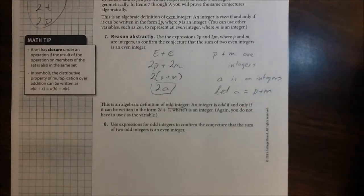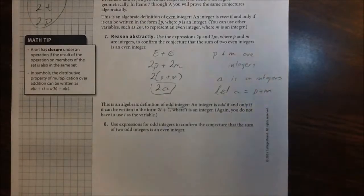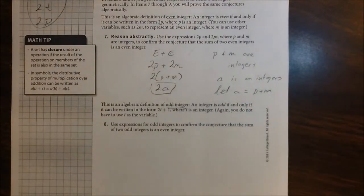But again, you don't have to use t as the variable. Don't get so caught up on these variables and where they're coming from. Variables are just representing, in this case, integers. They can be any integer they want. It doesn't matter what letter you use.